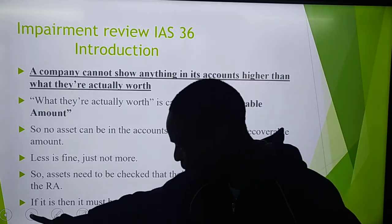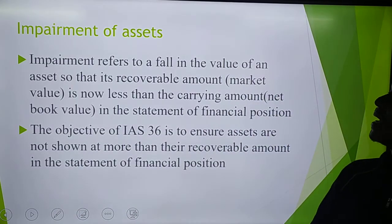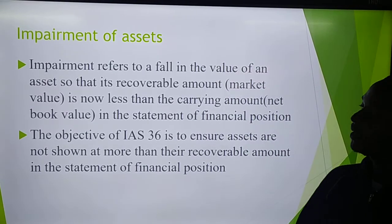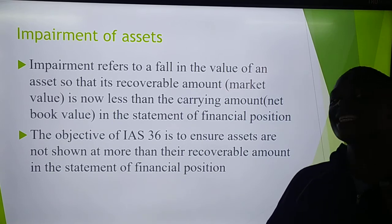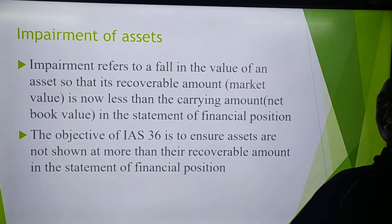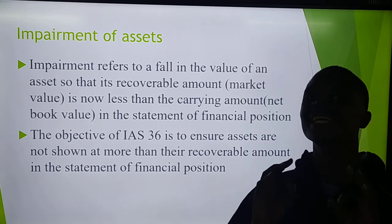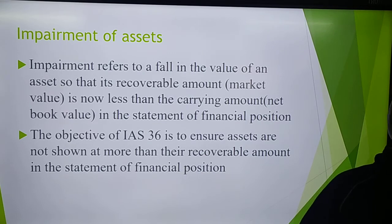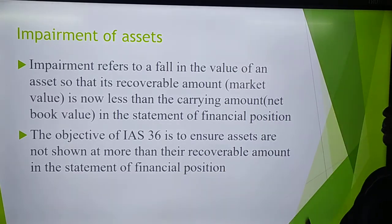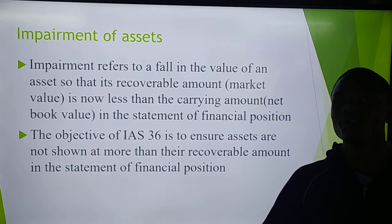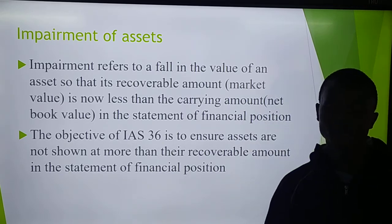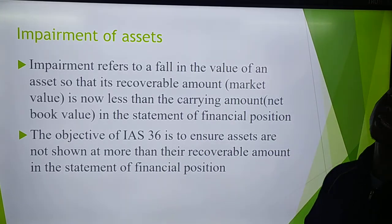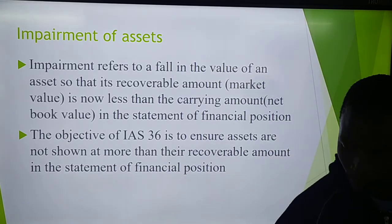What is impairment of assets? Impairment refers to the falling value of assets so that its recoverable amount or market value is now less than the carrying amount. The carrying amount is your normal net book value — cost minus depreciation. The objective of IAS 36 is to ensure assets are not shown at more than their recoverable amount in the statement of financial position.